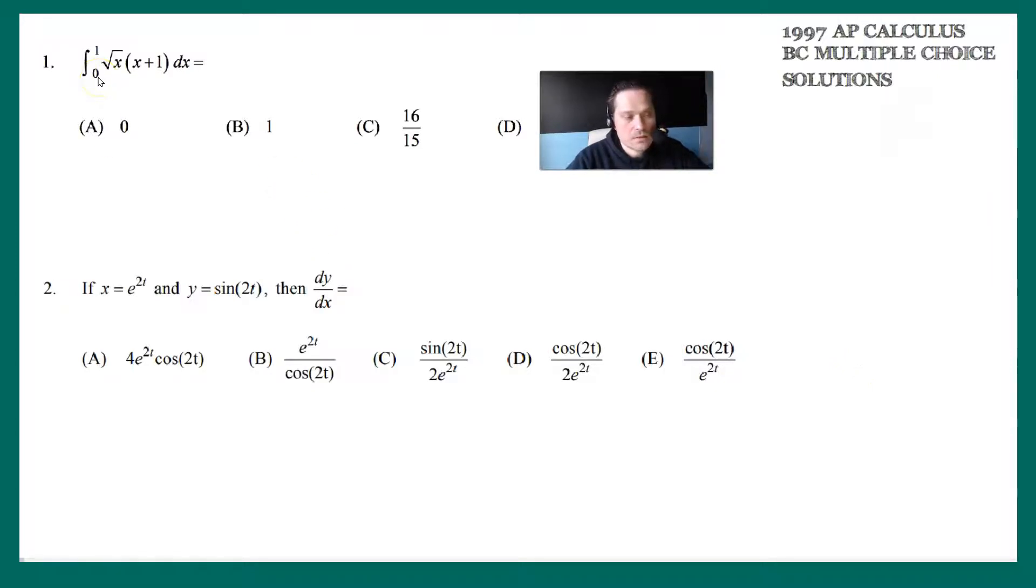You want to find the value of this integral from 0 to 1 of square root of x multiplying x plus 1. To work this out, let's proceed as follows.